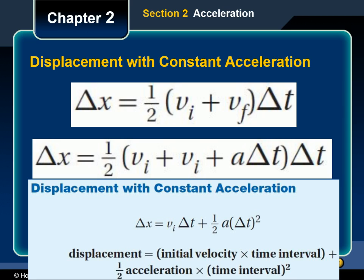If you want to know the displacement of an object moving with constant acceleration over a certain time interval, you can obtain another useful expression by substituting the expression for final velocity into the expression for displacement. Substituting the expression for final velocity with constant acceleration and simplifying gives us the equation for displacement with constant acceleration. This equation is useful not only for finding displacement, but also for finding the displacement required for an object to reach a certain speed or come to a stop.